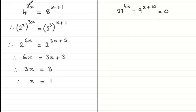You can even check it: if x is 1, you've got 4 to the power 3 — 4 cubed is 64. And if x is 1 in this one, you've got 8 to the power 1 plus 1, which is 8 to the power 2, which is again 64. So you can see it works. Now for the next example, what we've got is essentially three terms.